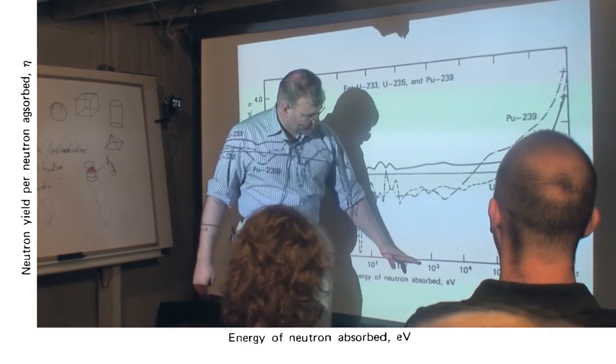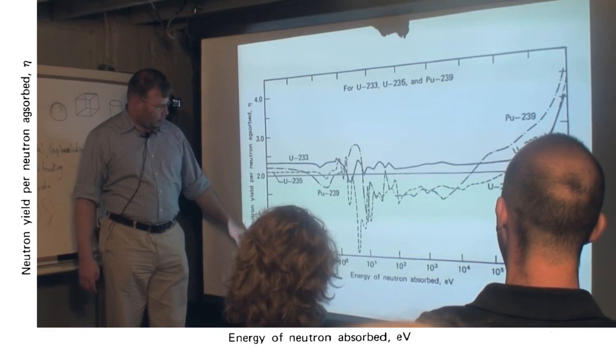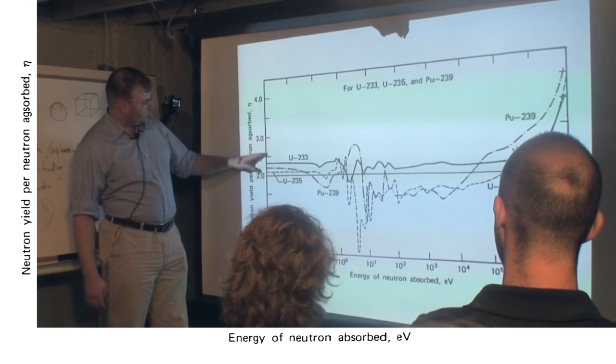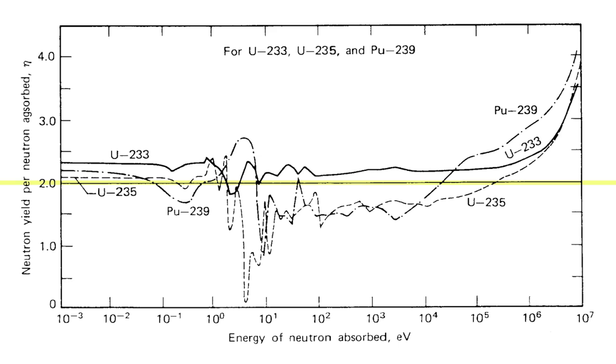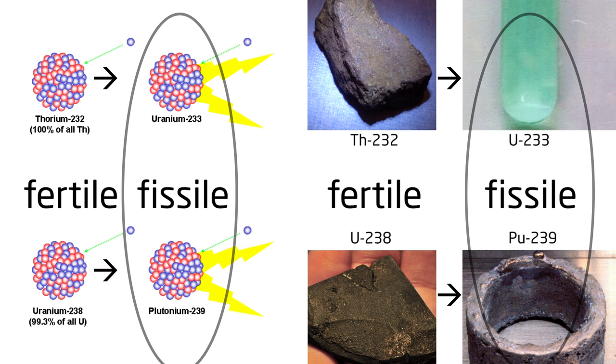How much energy did the neutron have that you smacked the nuclear fuel with? And then how many neutrons did you kick out when you smacked it through fission? Two is a very significant number in breeder reactors. You need two neutrons. You've got to have one to keep your process going, and you have to have another one to convert fertile material into fissile material.